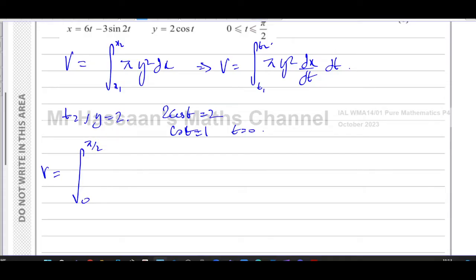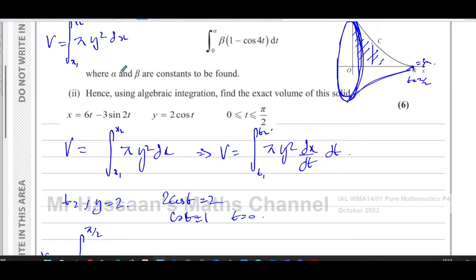And the other limit is this point here, where t is equal to pi over 2, pi over 2, as we were told, or we worked out earlier, that t equals pi over 2. And that's because that's when y is equal to 0. So t was equal to pi over 2. So we know our limits now are 0 and pi over 2. So that's one of the things we had to find, which was alpha. That's the limit there.